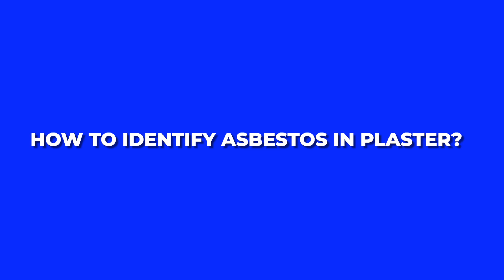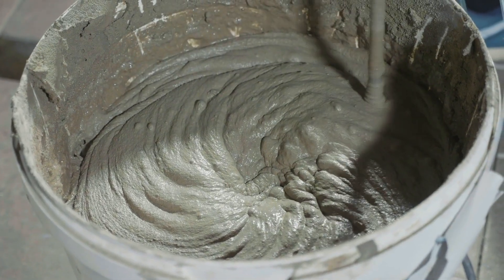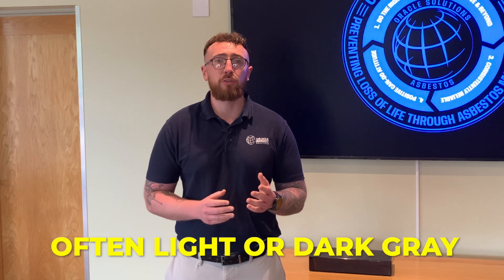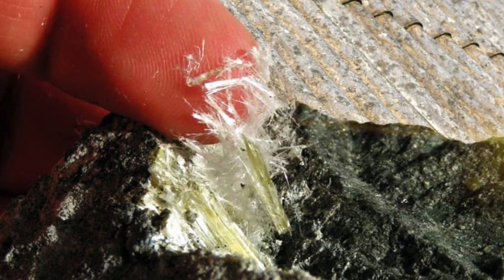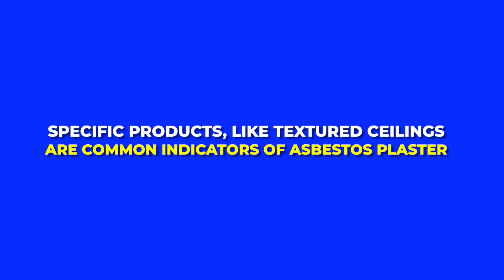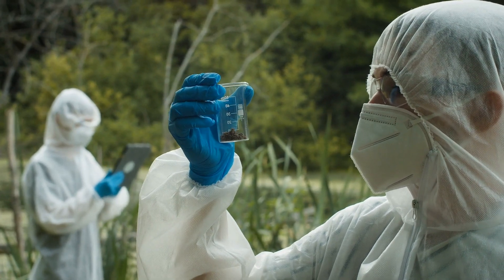Now let's discuss how to identify asbestos in plaster visually. Asbestos plaster looks similar to regular plaster, often light or dark grey. Sometimes you can see the fibrous texture of asbestos mixed in the plaster. Specific products like textured ceilings are common indicators of asbestos plaster. However, visual inspection alone is not enough to confirm the presence of asbestos.